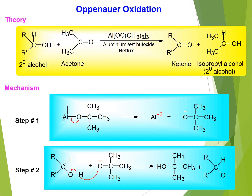In every name reaction, I try to discuss the theory, mechanism of the reaction, applications, and limitations. I already discussed the theory briefly in the previous slide. Here I am repeating the theory of Oppenauer oxidation again with an example. In the slide, we can see that the secondary alcohol and acetone are reacted in the presence of a catalyst, aluminum tertiary butoxide. The reaction mixture was refluxed for several hours.